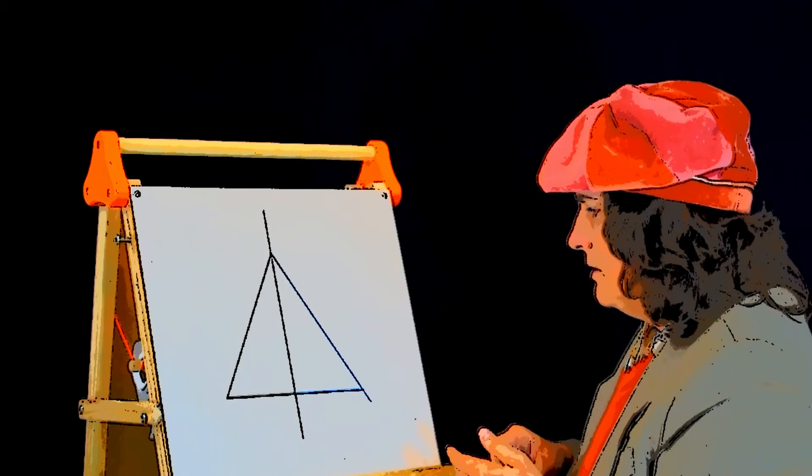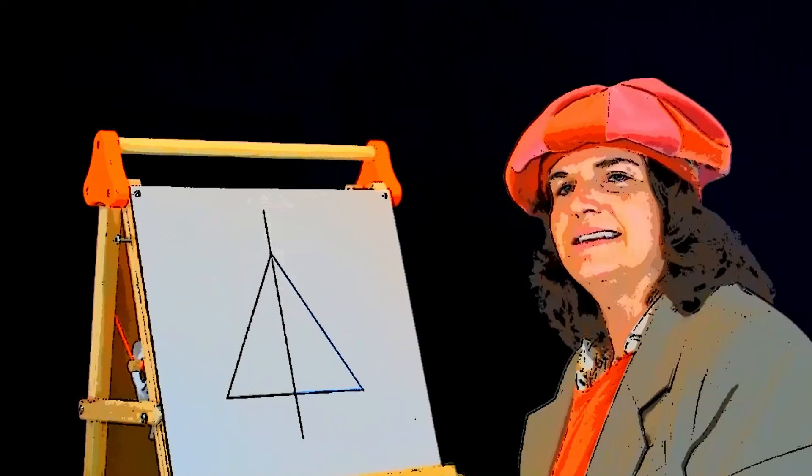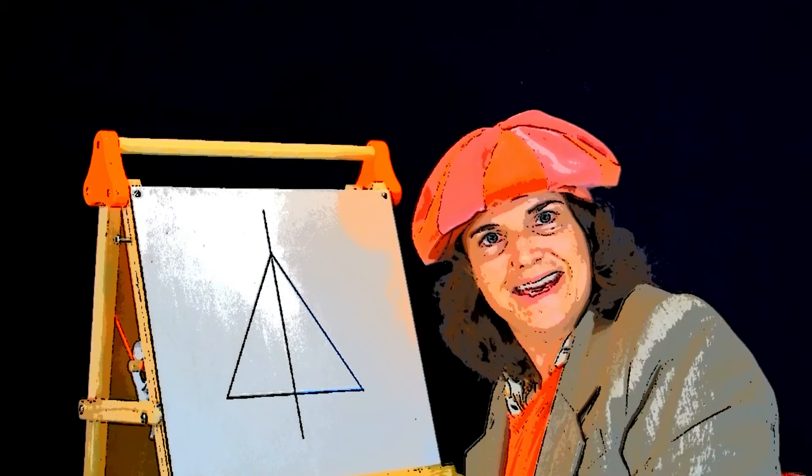And what do we have? We have a full triangle. Once I have erased the extra line. See? Simple.